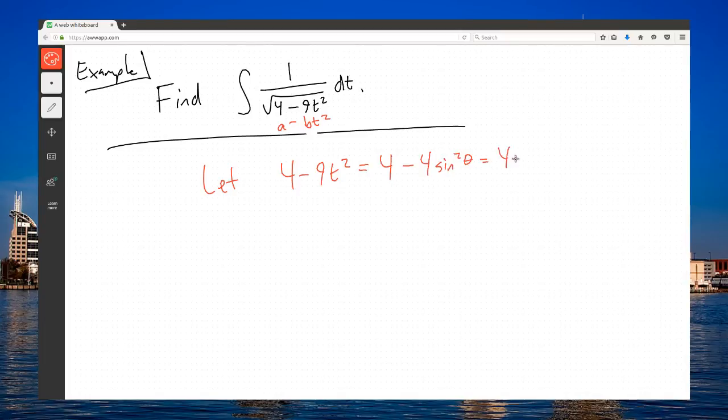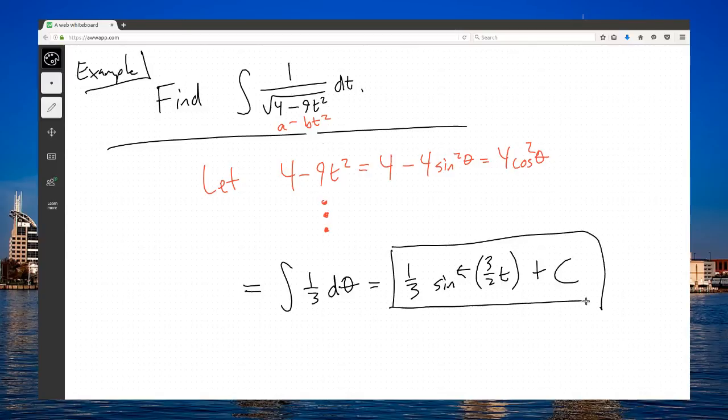I don't want to spend a lot of time talking about details, so I encourage you to do the work yourself. What you should end up with after this trig substitution is the integral of 1 third d theta. A lot of things will cancel when you do this problem. And that will end up being eventually 1 third sine inverse of 3 halves t plus c.